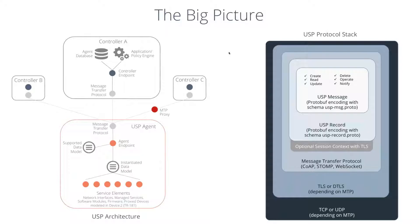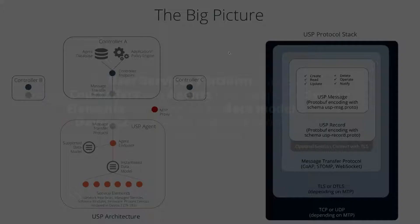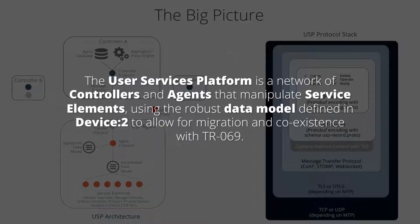This is the big picture of the components and architecture of USP. The key thing to keep in mind is that the User Services Platform is a network of controllers and agents that manipulate service elements using the robust data model defined in Device 2, allowing for migration and coexistence with TR-69. As we go through several USP use cases, we'll come back to this diagram and point at which of USP's technologies enable each use case.